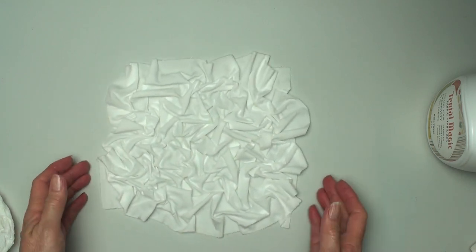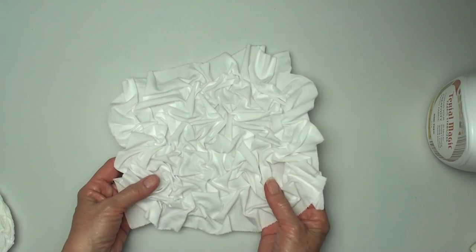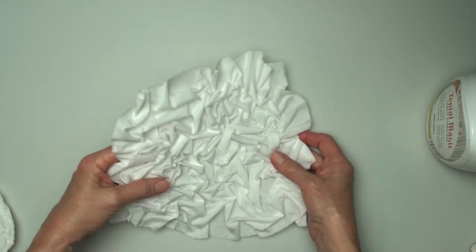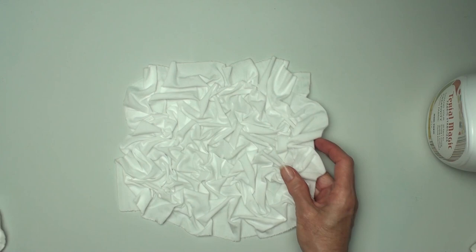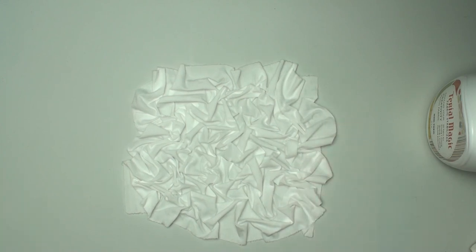I actually have another piece that I've already done that with, so I'm going to set that out and let it dry. After it dries, you're going to have a piece that is like this—it's stiff. That's what the Terial Magic does; it stiffens the fabric.